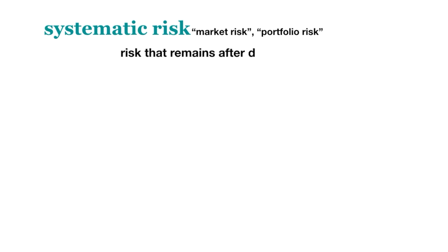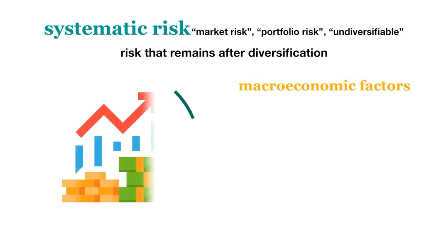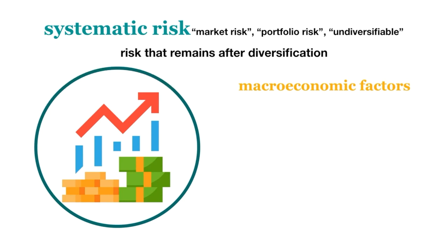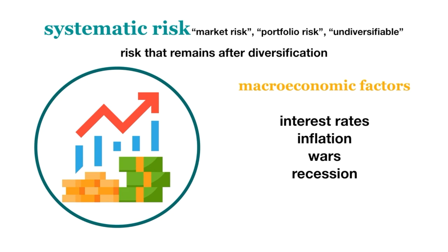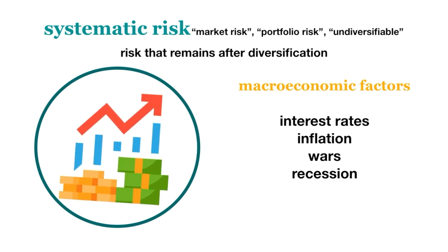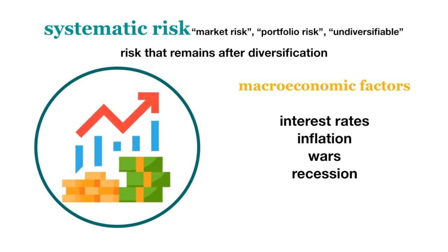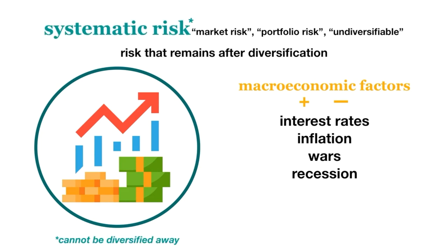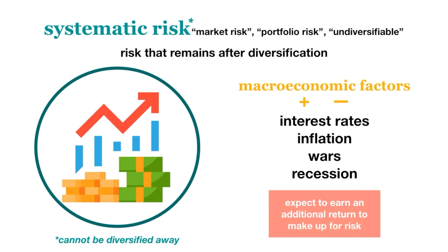The only risk that affects a security's return in the market is systematic risk. Systematic risk, also known as market risk or portfolio risk, is the risk that remains after diversification. It's also referred to as undiversifiable risk, because it's caused by macroeconomic factors that affect the entire market, not just a group of securities. Examples include changes in interest rates, inflation, wars, and economic recessions. These events impact the market portfolio — which theoretically contains all the assets in the market — in the same way, positively or negatively. So the returns on the entire market portfolio move together, increasing total return variance and introducing risk. This risk cannot be diversified away, and so investors will expect to earn an additional return to make up for that risk.